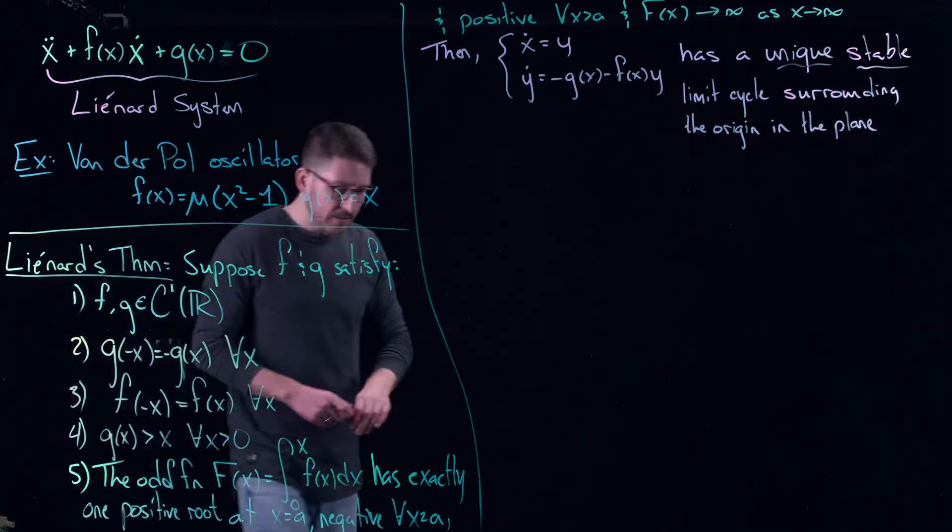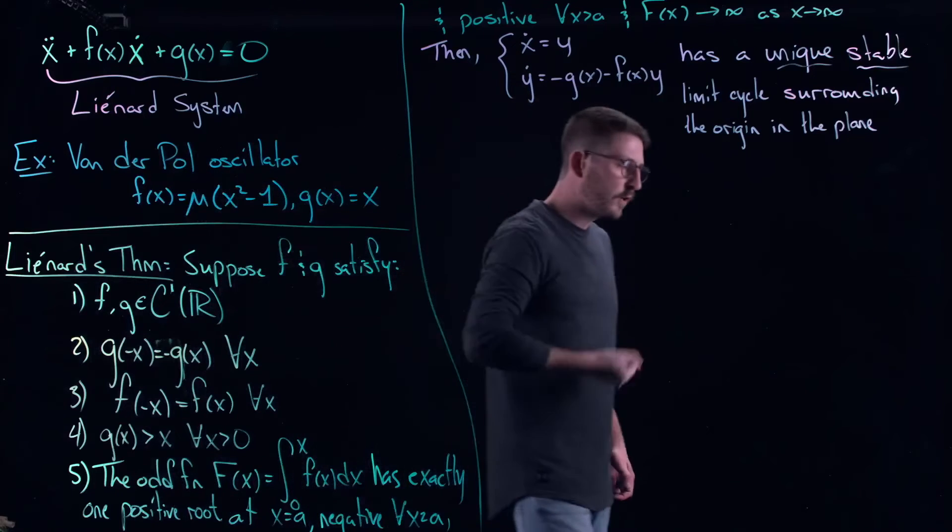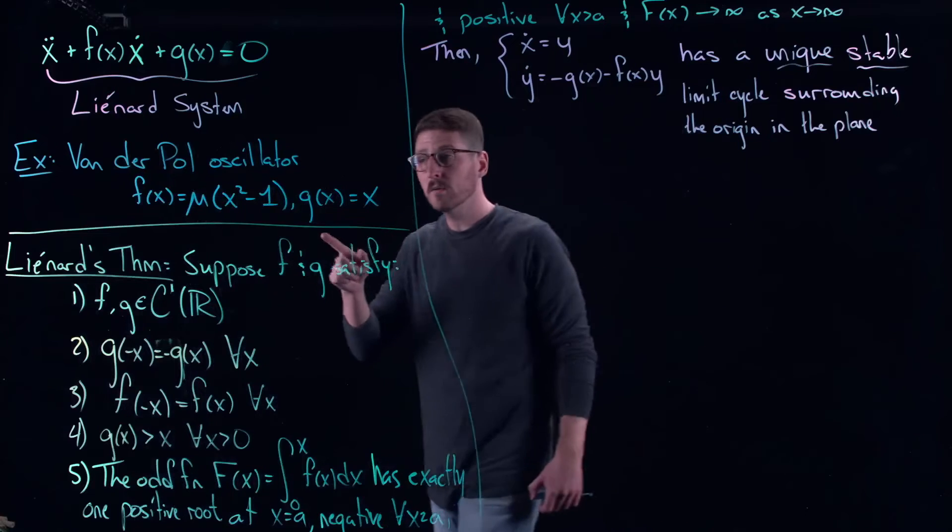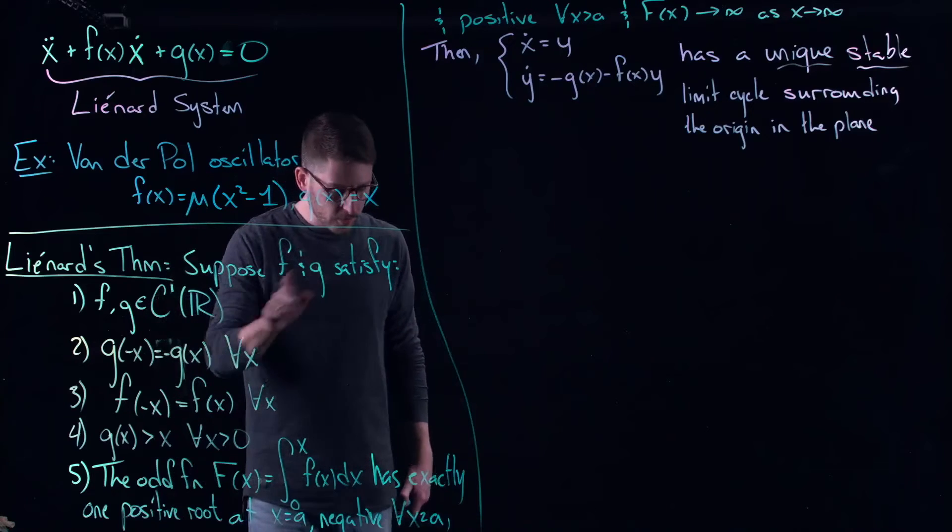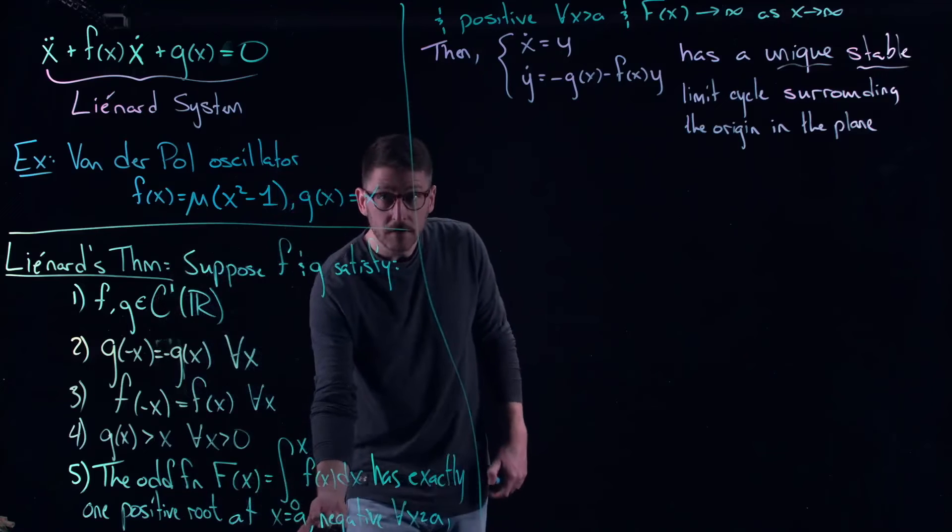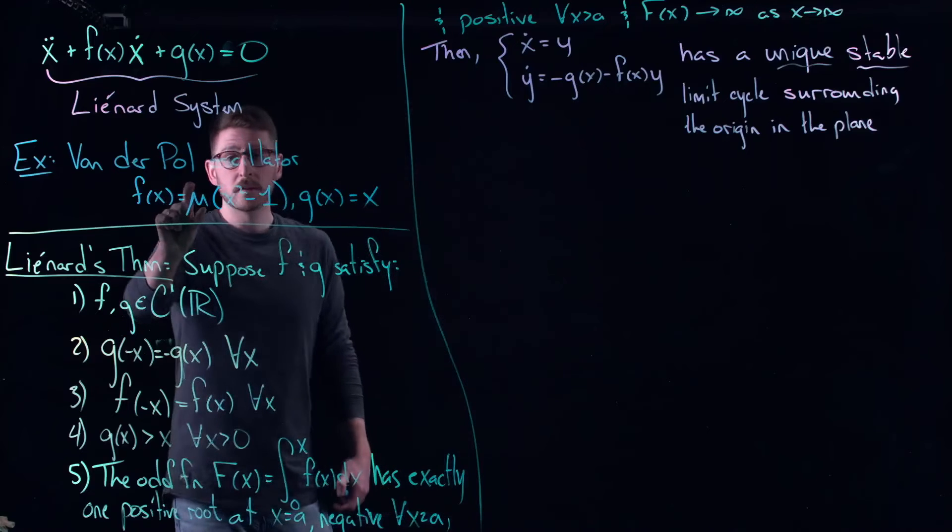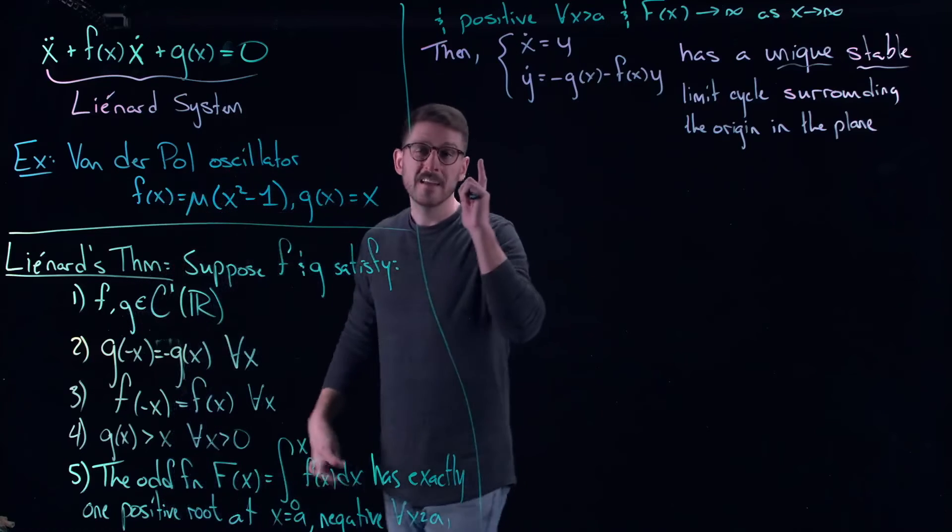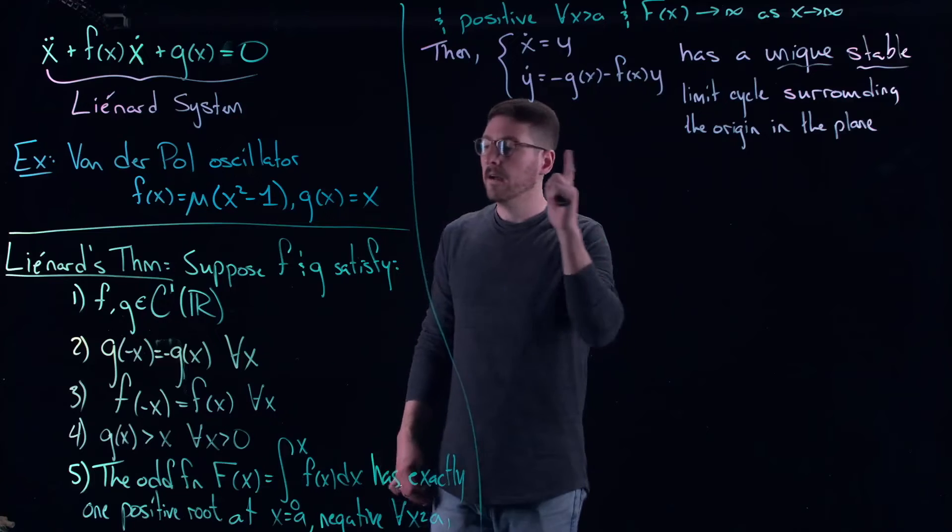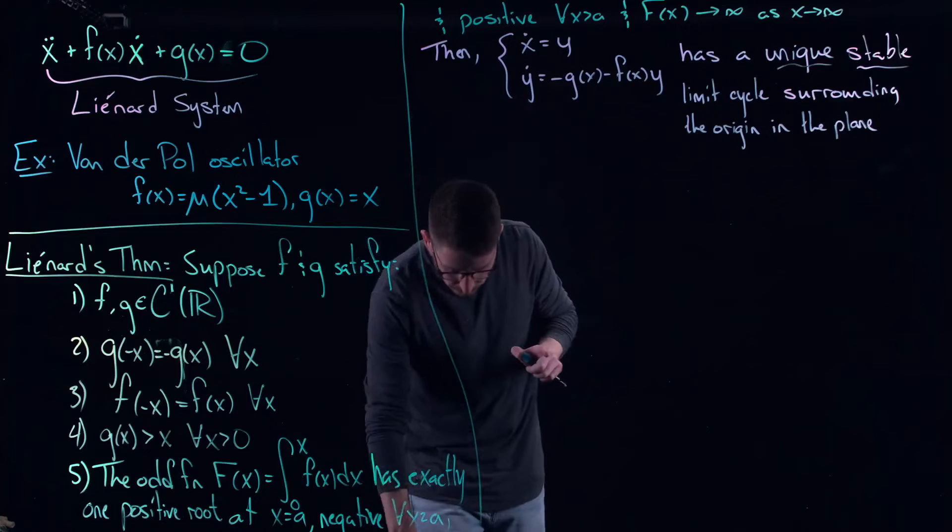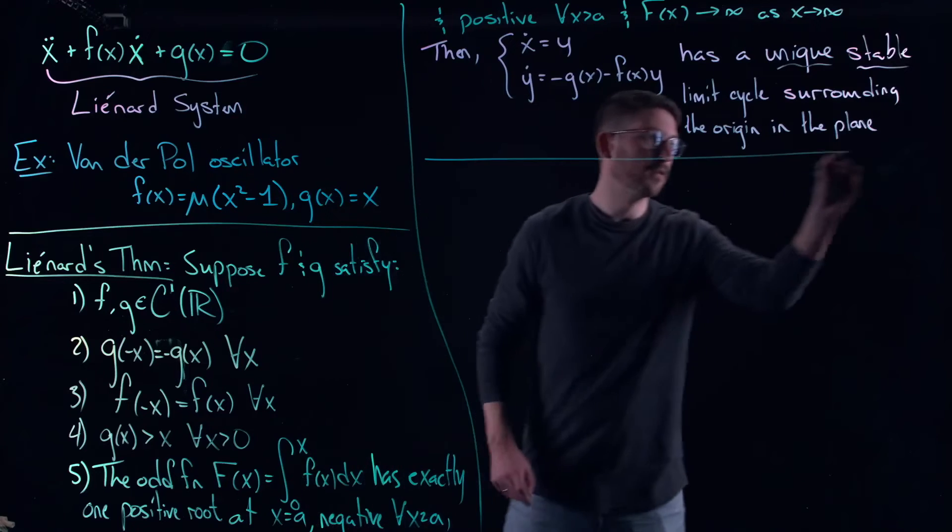So again I want you to think about this for a second. You can very easily prove this for the Van der Pol oscillator. Remember we did a lot of work showing that the Van der Pol oscillator should have a limit cycle. We didn't actually prove it, we took mu very very large. You can easily check that all of these are true. In fact the value of a for the Van der Pol oscillator is the square root of three and that proves that no matter what the value of mu is you always have a unique stable limit cycle for this Van der Pol oscillator. Applying Liénard's theorem very nice, sort of very easy here, but there's some interesting pieces that I want to sort of note.